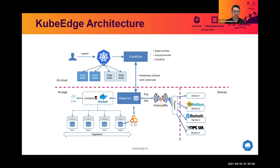For the data plane, to simplify service communication between applications located in different networks on the edge, KubeEdge provides the EdgeMesh framework to serve as a network-agnostic layer for applications to discover each other and easily communicate, just as the same experience when running a Kubernetes cluster in the cloud.